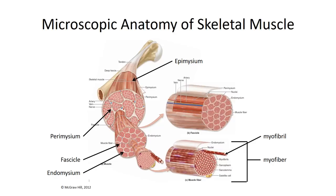Let's back up for a second, because the nomenclature can be a bit confusing. This entire structure represents a single muscle cell, which we also call a muscle fiber or simply a myofiber. Within each of these cells are numerous contractile organelles that also happen to be cylindrical, and which we refer to as myofibrils. So: myofiber equals muscle cell; myofibril equals contractile organelle.